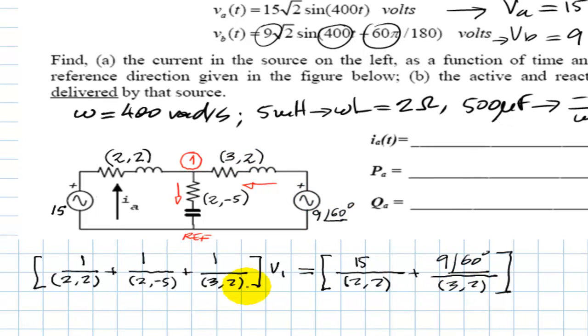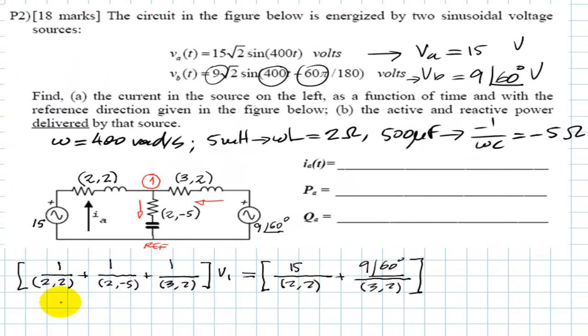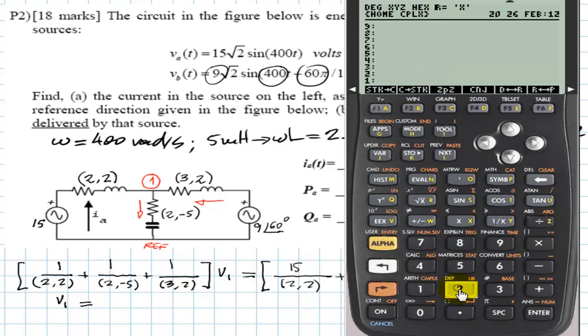We solve for V1 directly using the calculator. First, entering the admittances: 2+j2 inverse, plus 2-j5 inverse, plus 3+j2 inverse. Adding them together gives the left-hand side coefficient.